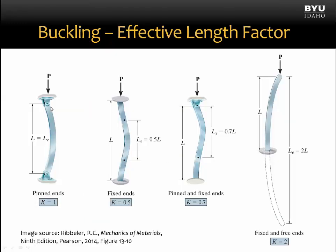When we have a pinned-pinned member, the value for k is equal to 1, and the full member length experiences buckling. When we have fixed-fixed end conditions, we see that in the buckled shape there are two inflection points, and the distance between the two inflection points is equal to one-half the total length of the member. Thus, our effective length factor is 0.5.